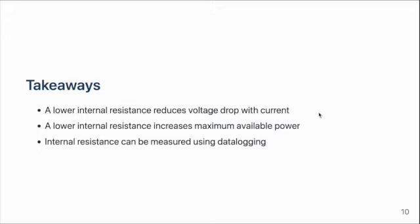To sum up, a lower internal resistance reduces the voltage drop with current and increases the maximum available power from the battery. You can measure your battery's internal resistance if you have data logging capability on your controller. Thanks for watching, and have fun riding your EVs.